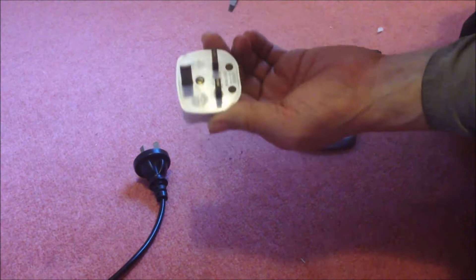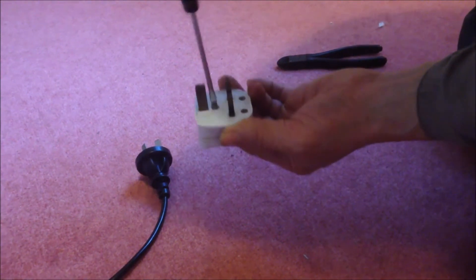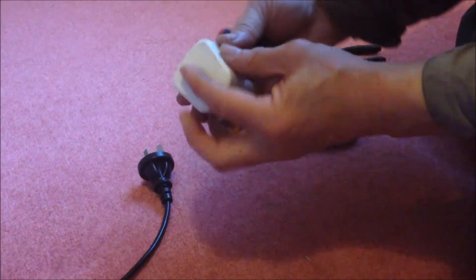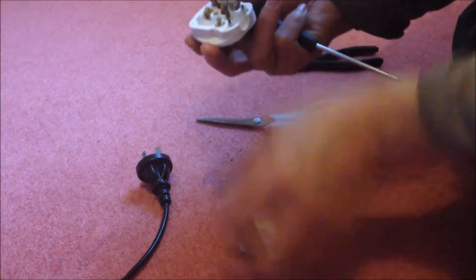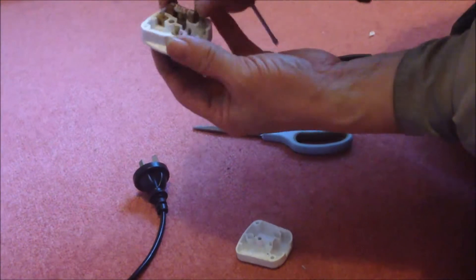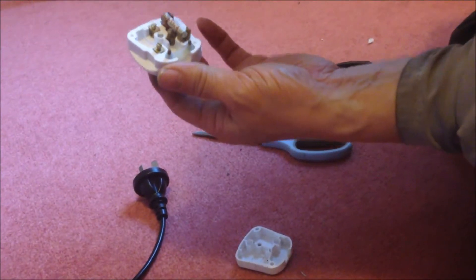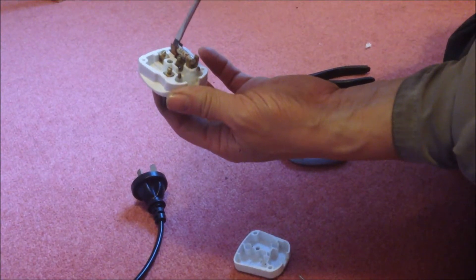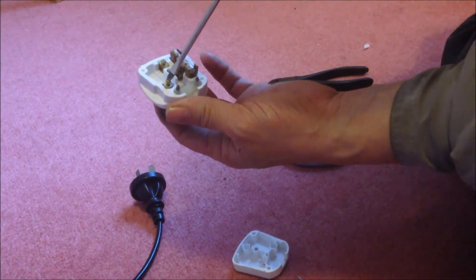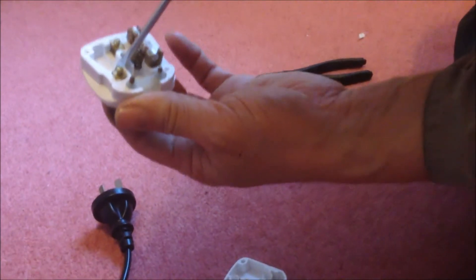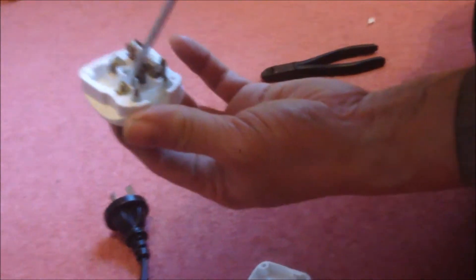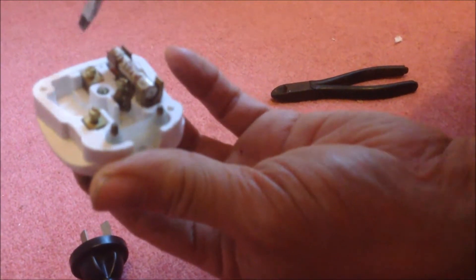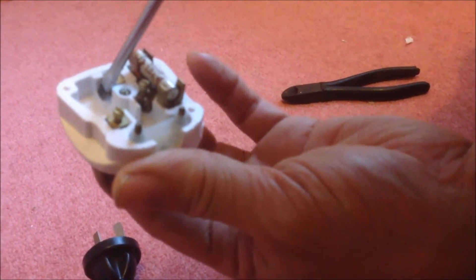There is a big screw here in the middle, just unscrew this and then you can have the cap open. Inside here you can see the fuse and there's a connector for live, so live is related to the fuse. This is the neutral, you can see N over there. This is a neutral, this is a live, there's the L over there, and this one is the earth, there's the E over there.